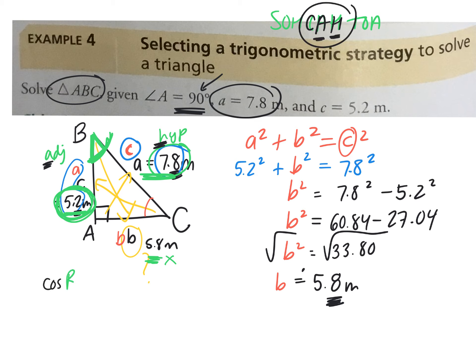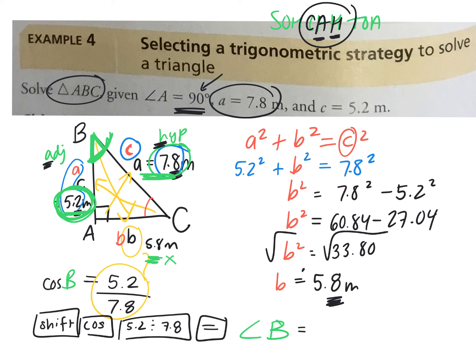SOH CAH TOA. Which ratio uses adjacent and hypotenuse? Cosine. Adjacent and hypotenuse. So cosine B, this is similar to the last example we just did, is equal to what? What's the ratio? Adjacent is 5.2 divided by 7.8. So do that on your calculator, and then you're going to hit shift cos, whatever the answer is to this, equals—what do you guys get? What's angle B equal to? 48 degrees.